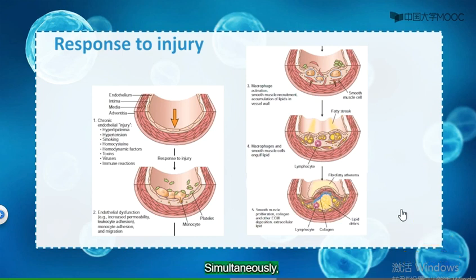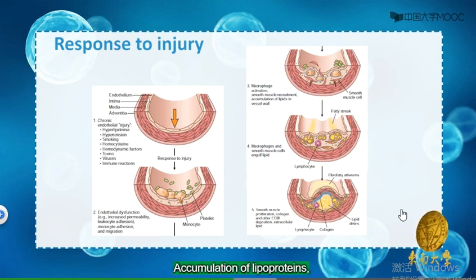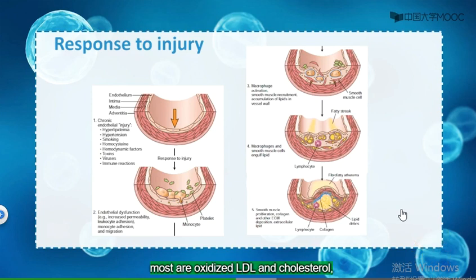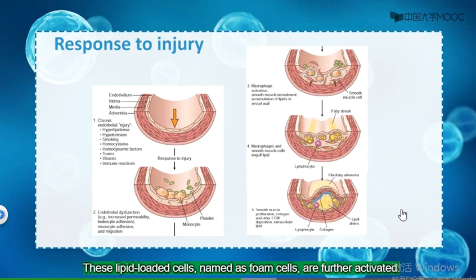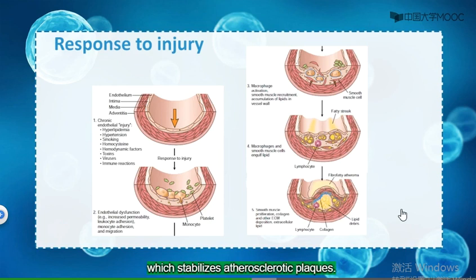Simultaneously, smooth muscle cells are recruited to the intima. Accumulation of lipoproteins — most notably oxidized LDL and cholesterol — are engulfed by macrophages and smooth muscle cells. These lipid-loaded cells, named foam cells, are further activated. The recruited smooth muscle cells synthesize extracellular matrix, most notably collagen, which stabilizes atherosclerotic plaques.